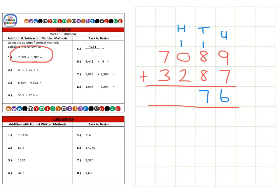Here we have 100 add 200, which is 300, and finally we have 7,000 add 3,000, which is 10,000, and we carry that one into the 10,000 column for a final answer of 10,376.